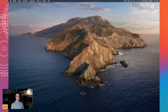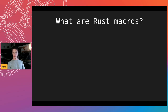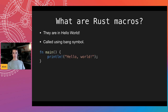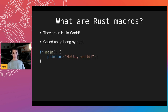We said Rust solves all these problems. Now let's take a look at Rust macros. I'm 100% sure you've already seen them, because they're in the Hello World example — they're called using the bang symbol. This is the Rust Hello World, and as you can see, `println` is a macro. This bang symbol means it gets called as a macro. If you don't have this symbol, the compiler will say "println is a macro, but you tried to call it as a function."